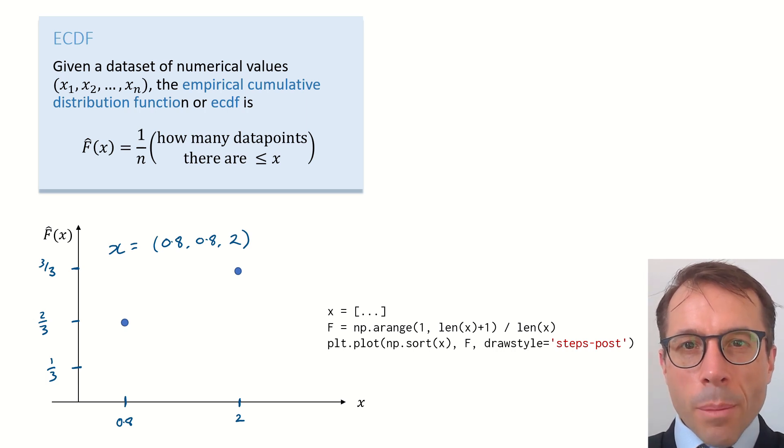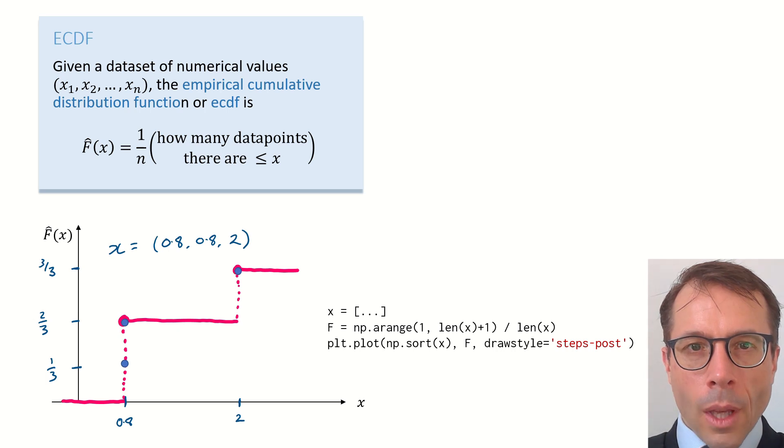The nifty thing here, though, is I get the same answer whether I think carefully about the value of f-hat at every point, or whether I just blindly follow the code recipe here, which just plots an extra point at 0.8 comma 1 third. When I draw the step function, it all comes out the same. So this code snippet is all we ever need for plotting an ECDF, whether or not our dataset has duplicates.